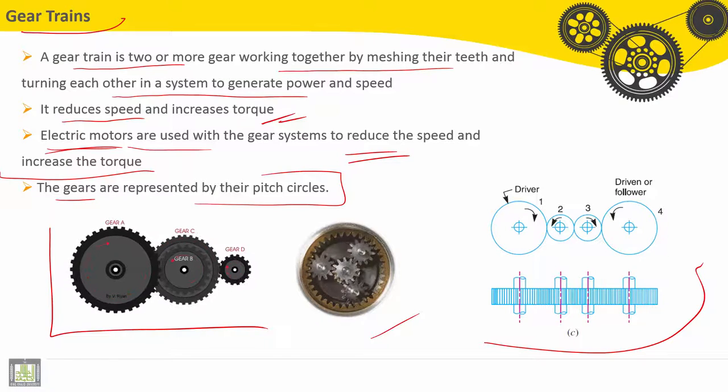The gears are represented by their pitch circles. We know that pitch circles between pinion and gear, or driver and driven, are tangent at the contact point.